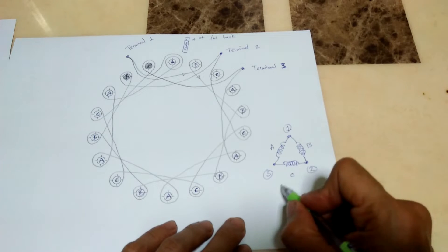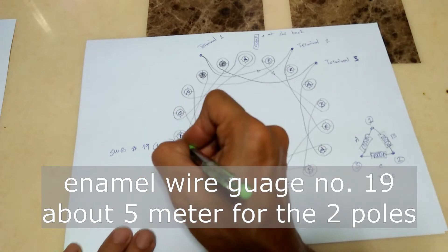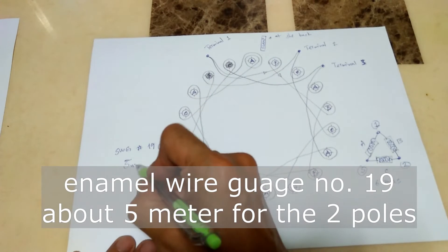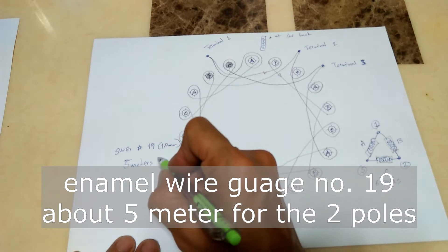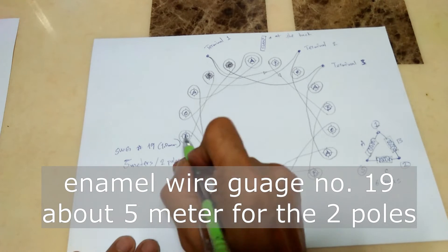By the way, I used a gauge 19 enamel wire and about 5 meters length of new wire to rewind the two poles of the stator.